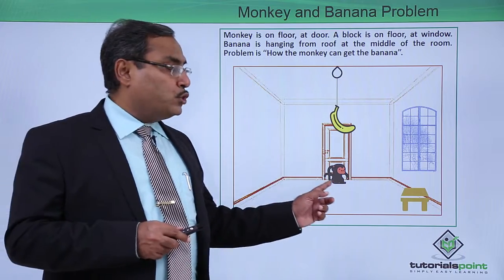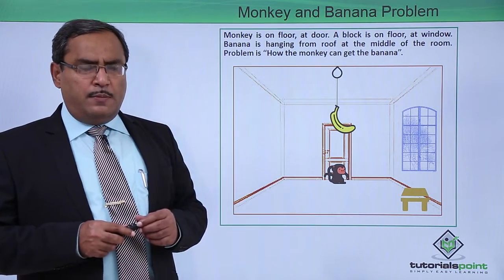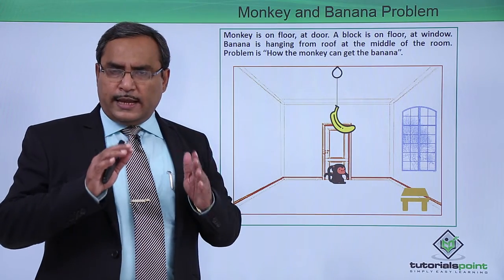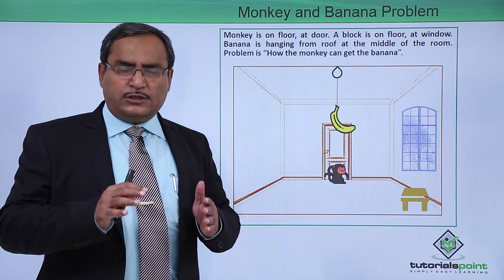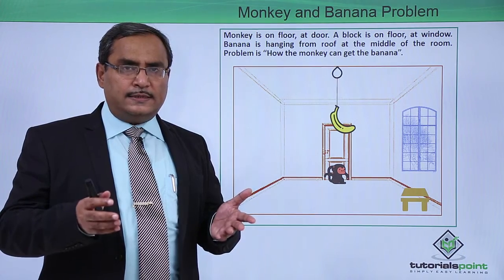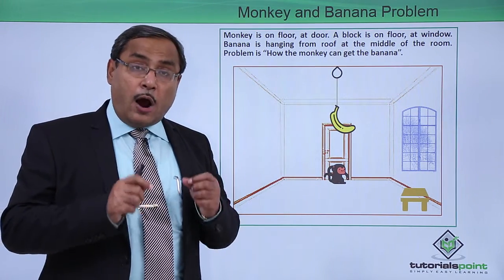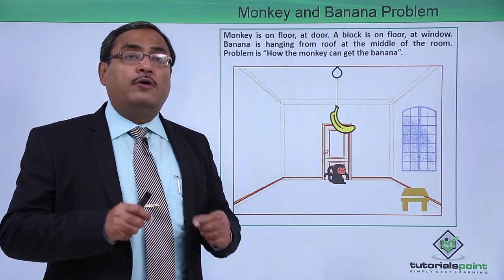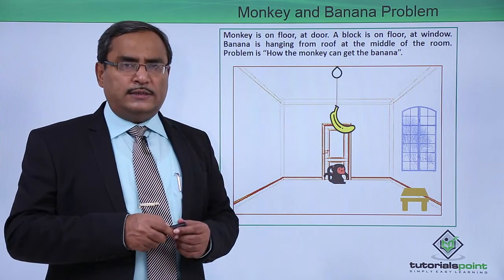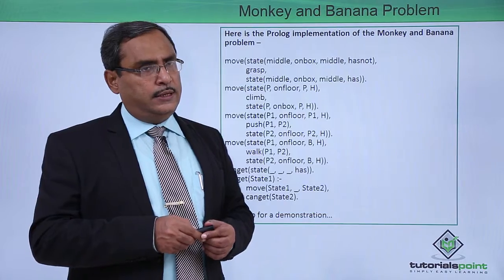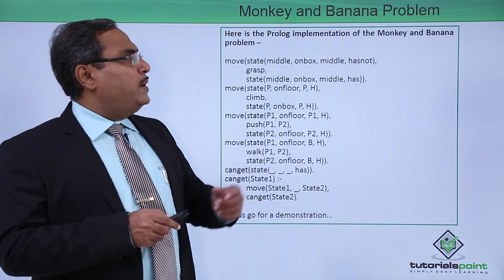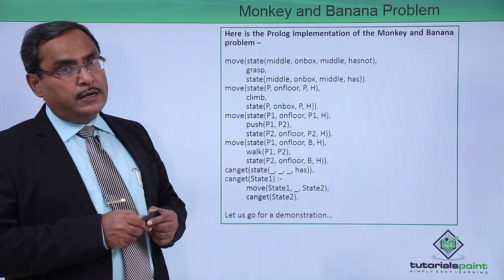So those are the possible moves. But how do we formulate this in Prolog code? Thinking about the problem and getting a solution from logical analysis is good, but how to write this in Prolog formula — in Prolog code? We are giving one suggestion. Here is the Prolog implementation of the monkey-banana problem.